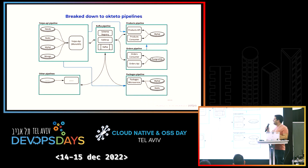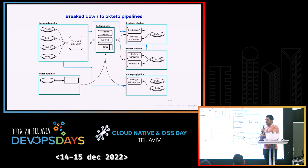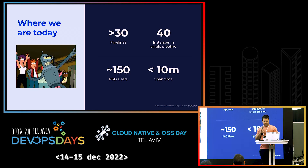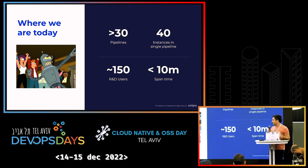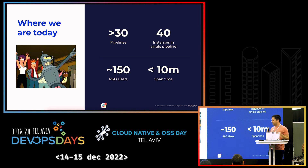We took our many microservices, and each service with its dependencies became what we call a pipeline — a unit in Okteto that contains only what it needs. You can declare your dependencies, so if you're using one service that depends on another, it will raise its pipeline, but you still don't need to raise everything. Today, we're already using Okteto very widely in our company. We have more than 30 pipelines and growing every day. 150 users are actively using it daily and really enjoying it. Spin-up time is up to 10 minutes, but usually just a small part is raised, so it takes two, three, maybe five minutes.